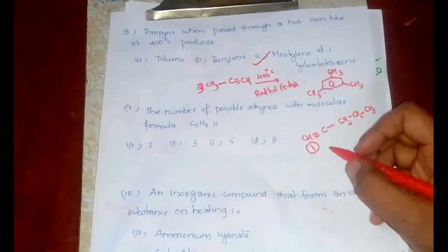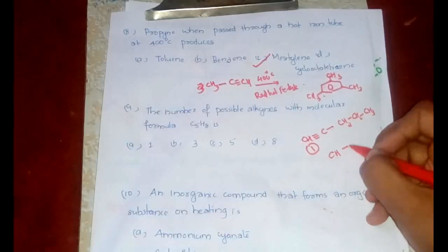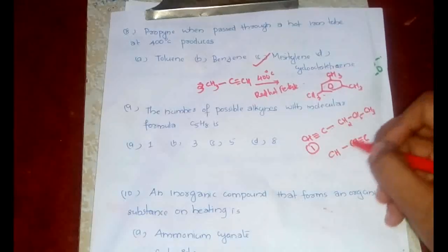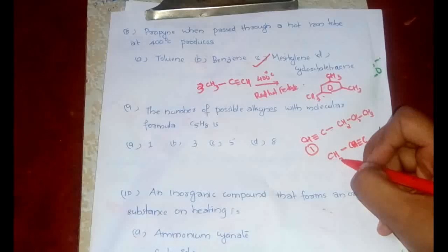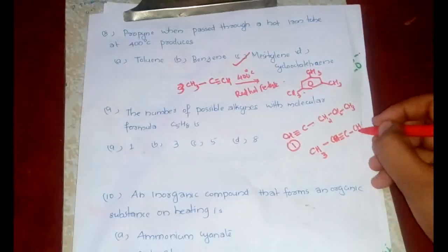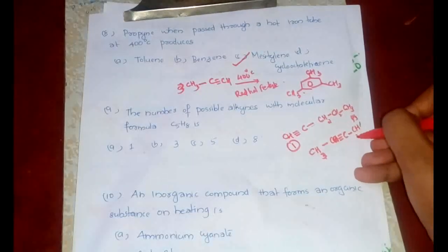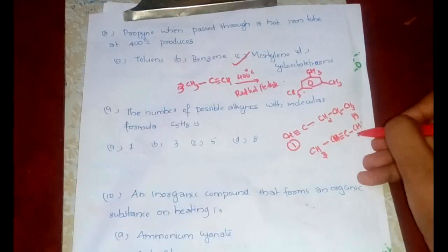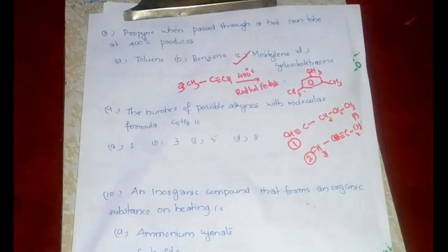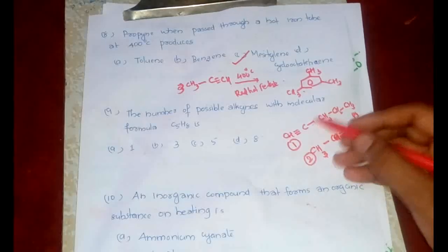In the next stage, what can we do? We can shift the triple bond to the second position, and that would be pent-2-yne. Let's see about that. CH3-C≡C-CH2-CH3. Let's count the number of hydrogens: 3 plus 3 is 6, plus 2, it would be 8 again. So this is the second isomer.